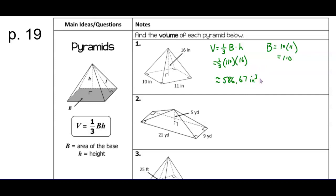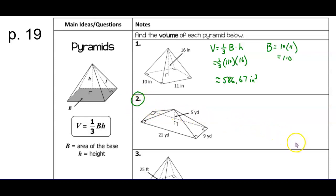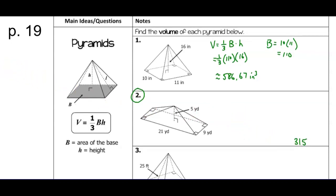Example two is similar — we know the height, so we can use it directly as H. We have another rectangle, so we do length times width for the base area. The final answer for number two should be 315. If your procedure didn't lead you there, mark it and we'll discuss it when we're together again.